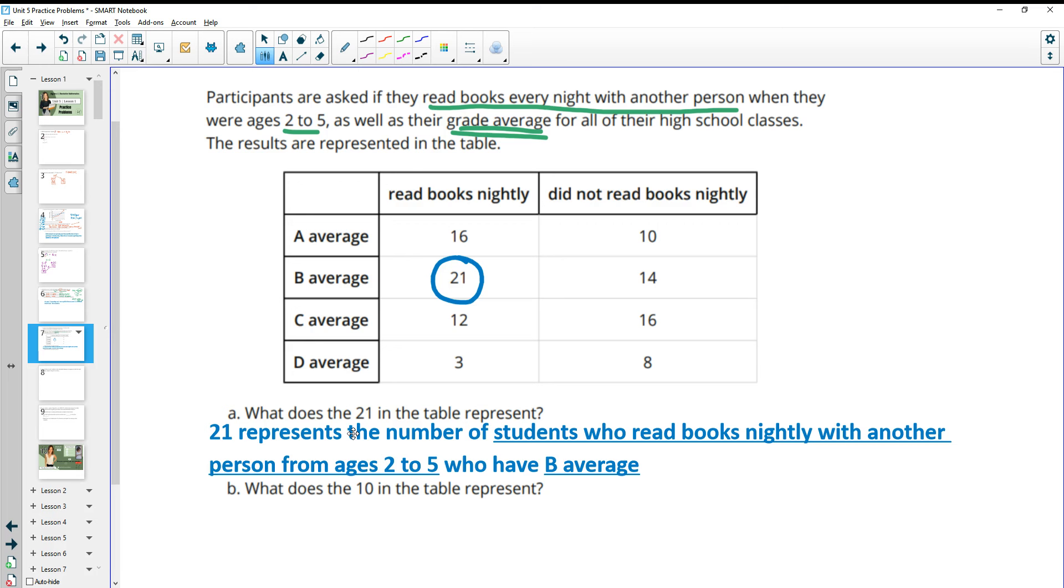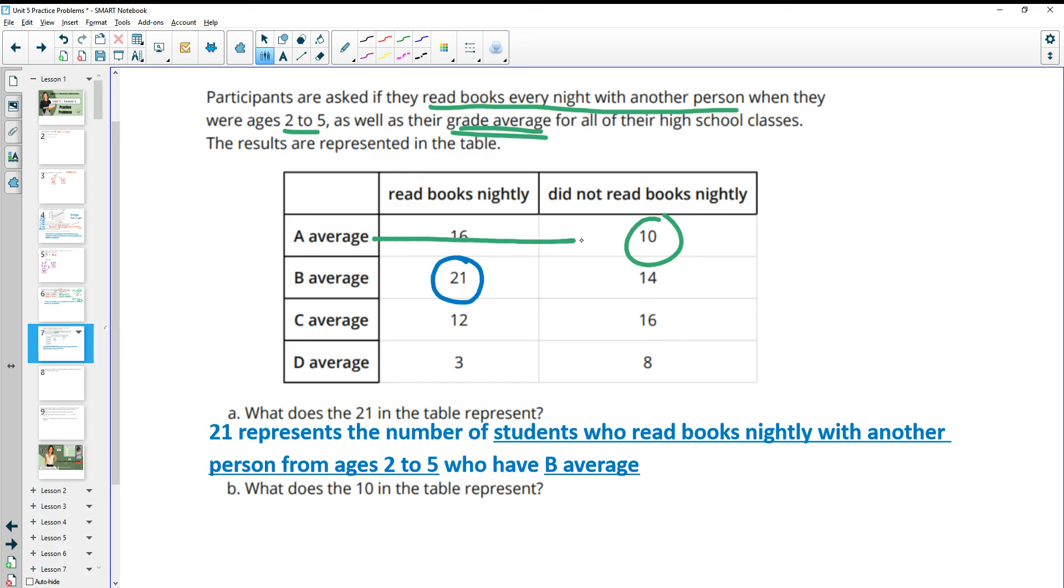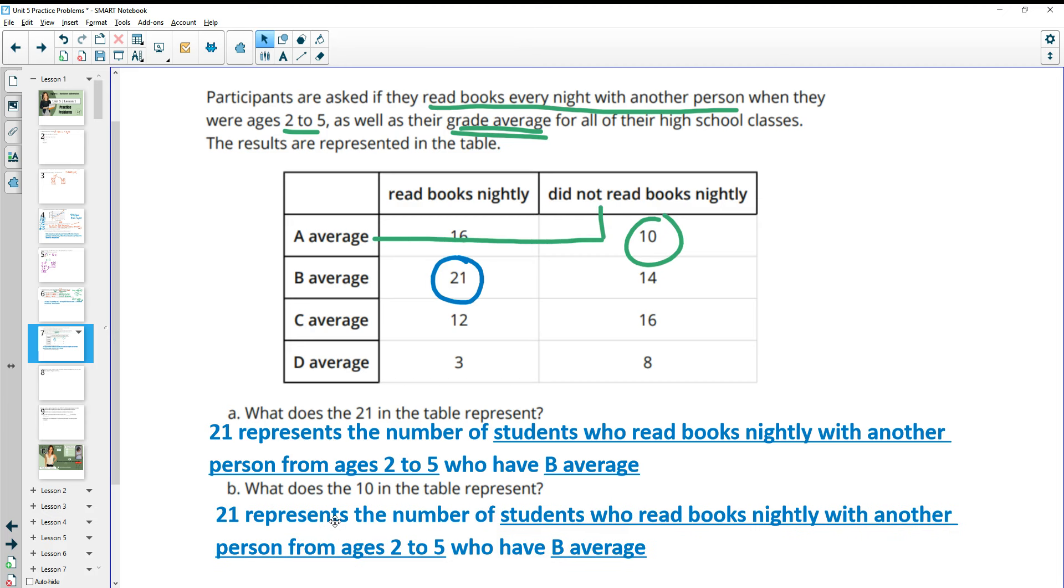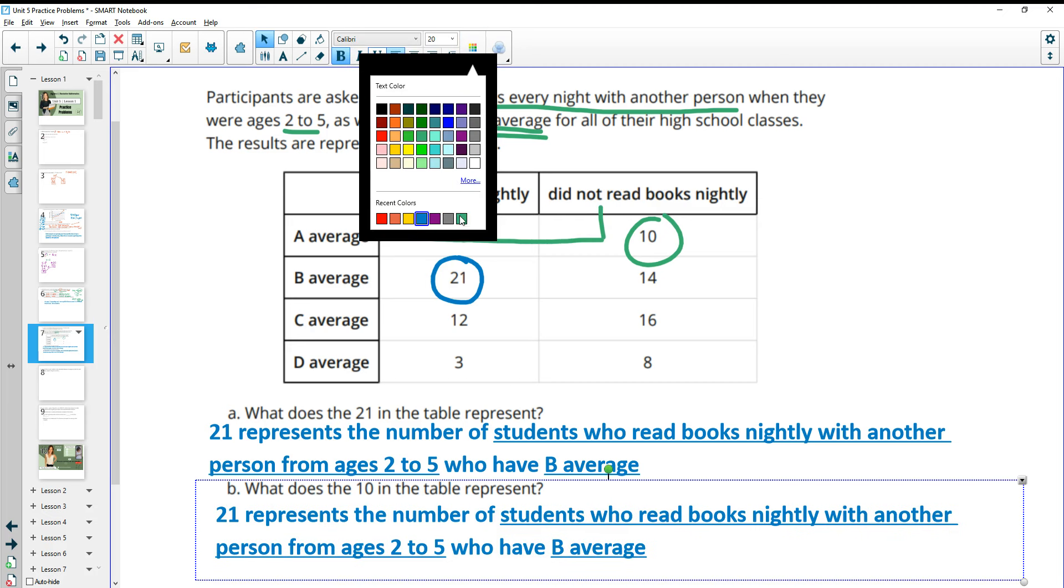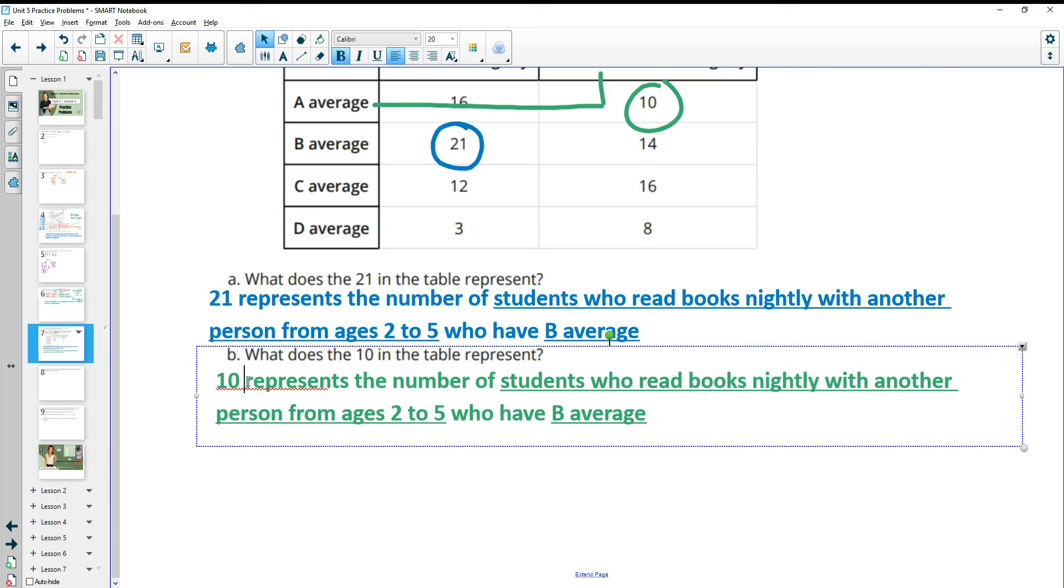And then what does the 10 represent in the table? So then the 10 here is going to be A average and did not read nightly. So the 10 represents the number of students who did not read books nightly with another person from 2 to 5 and have an A average. So they have an A average and they did not read nightly with another person from ages 2 to 5.